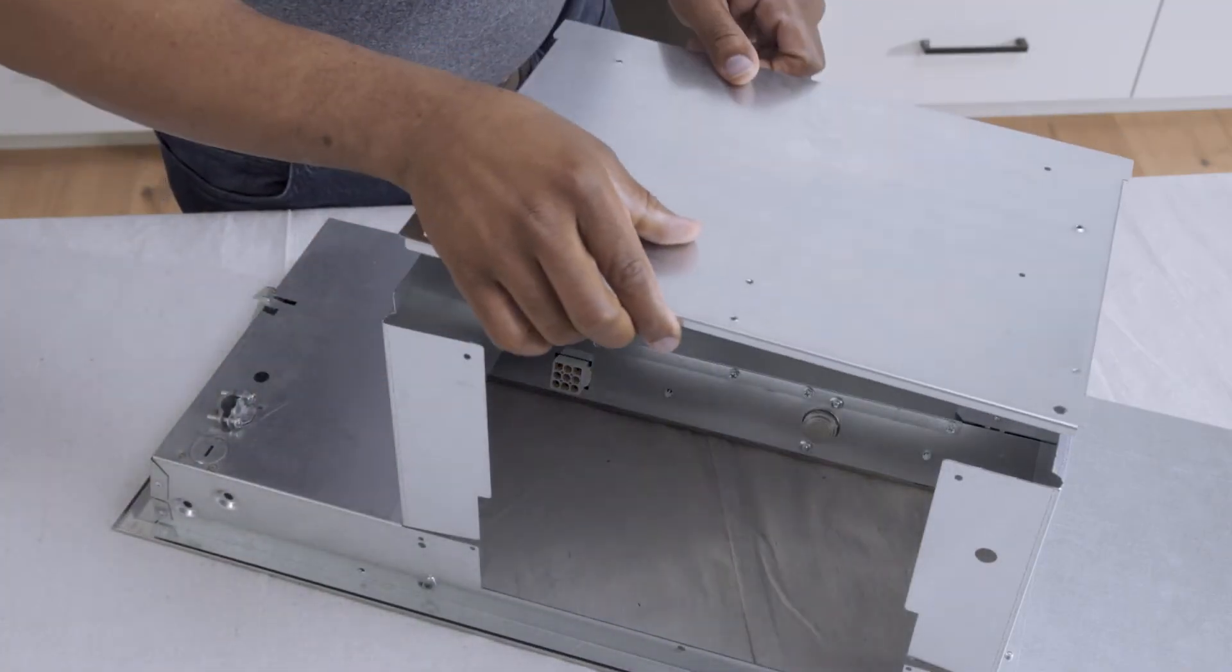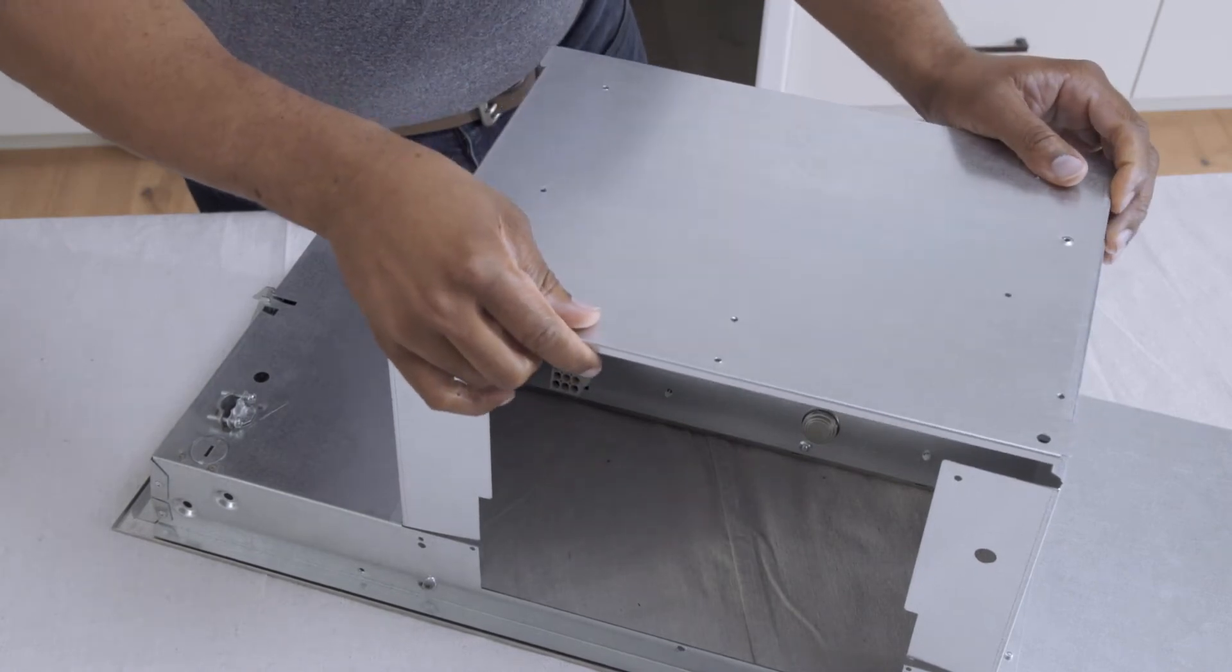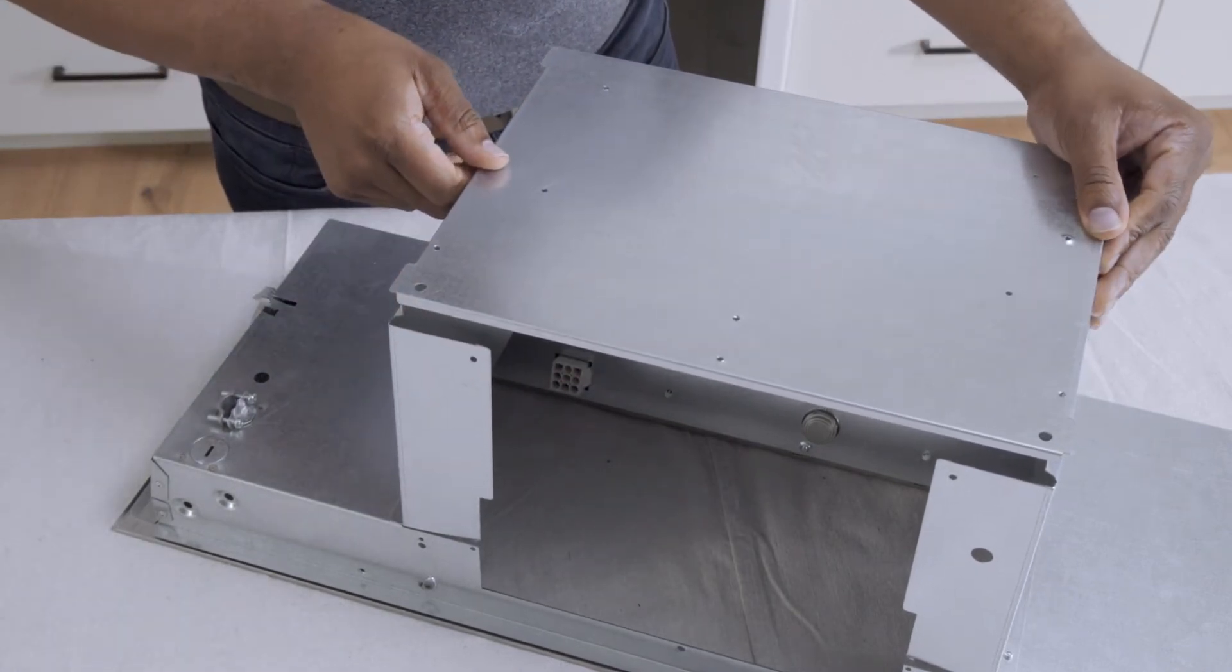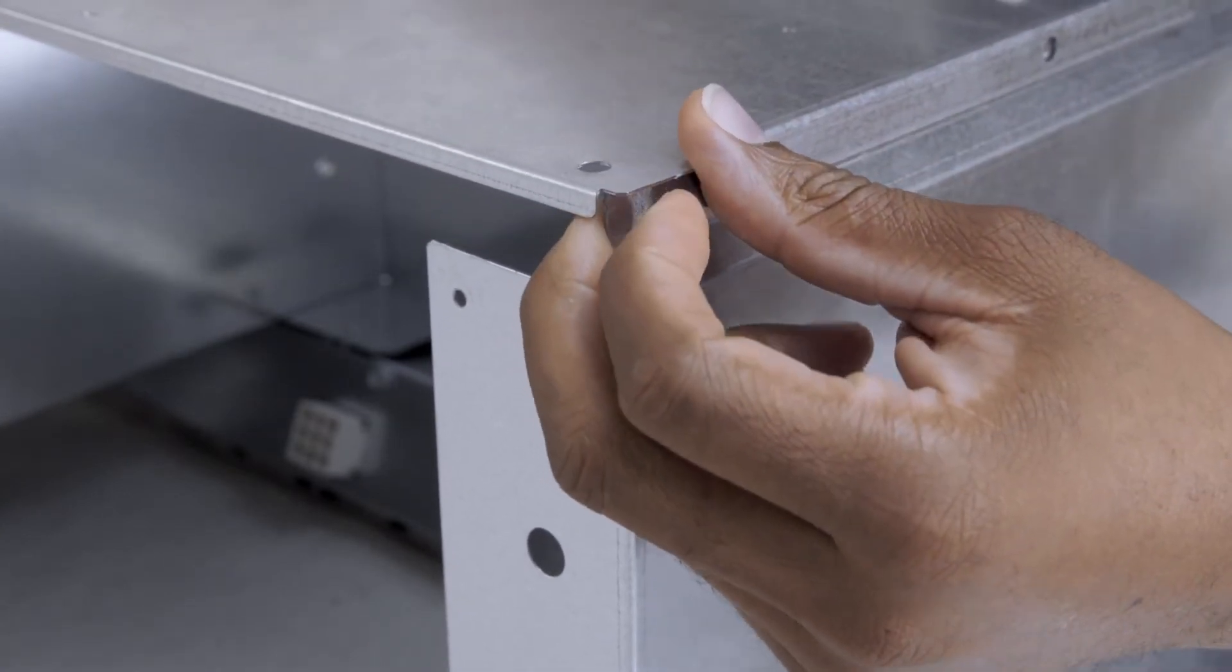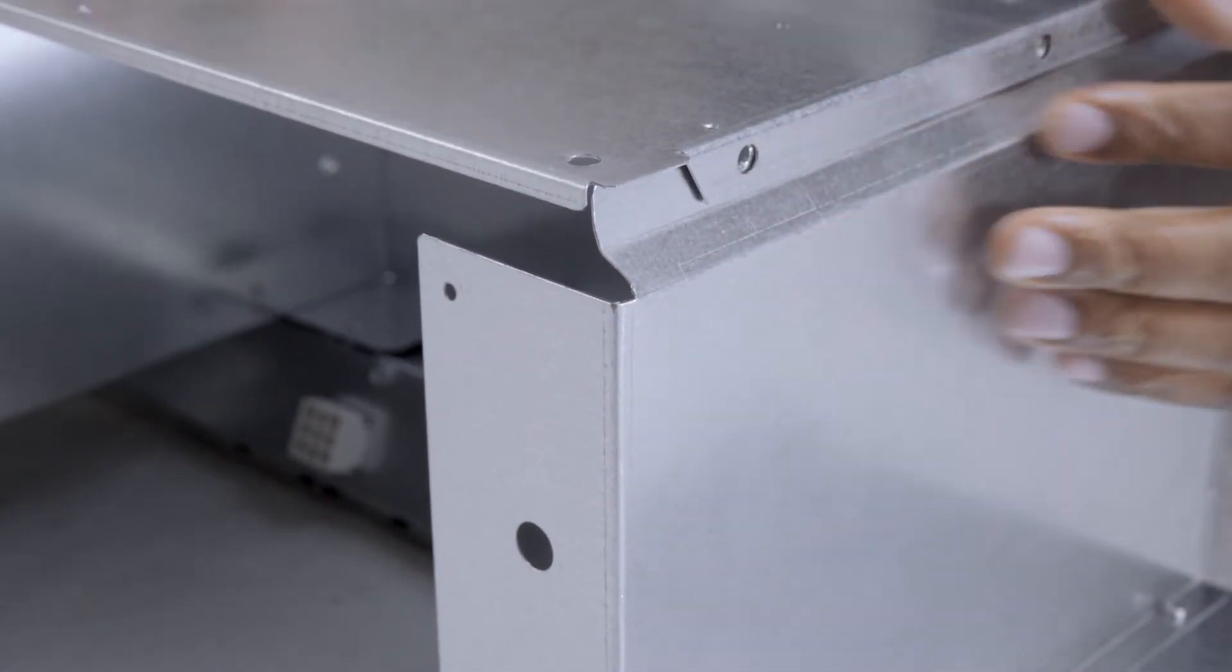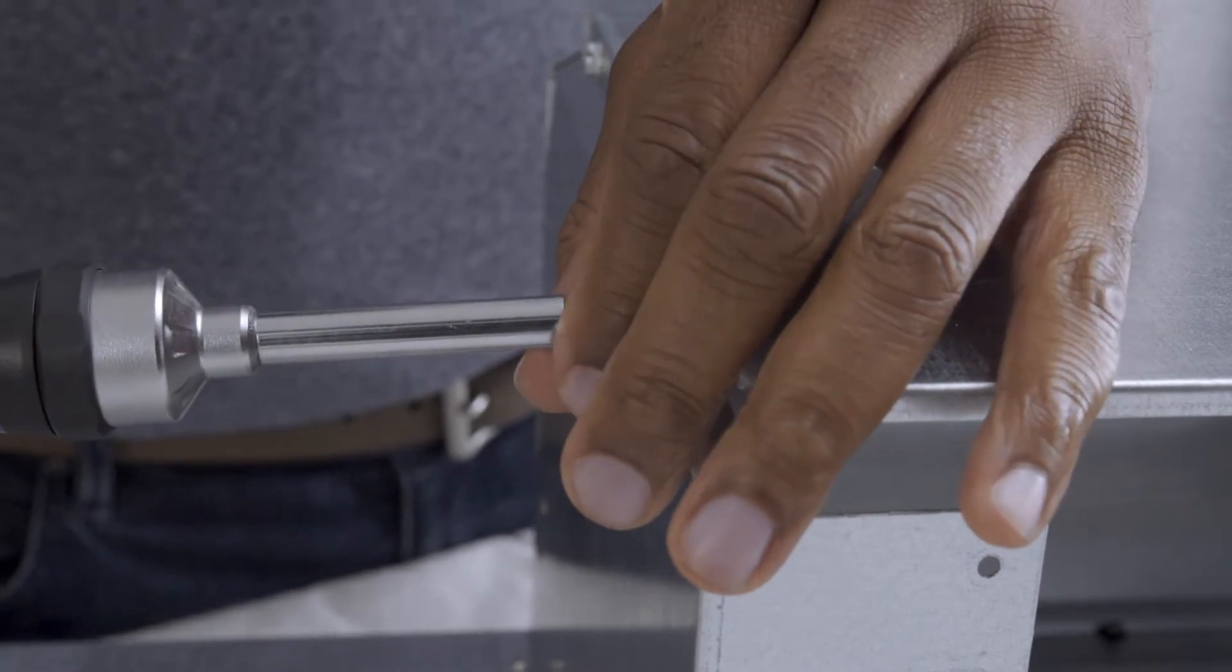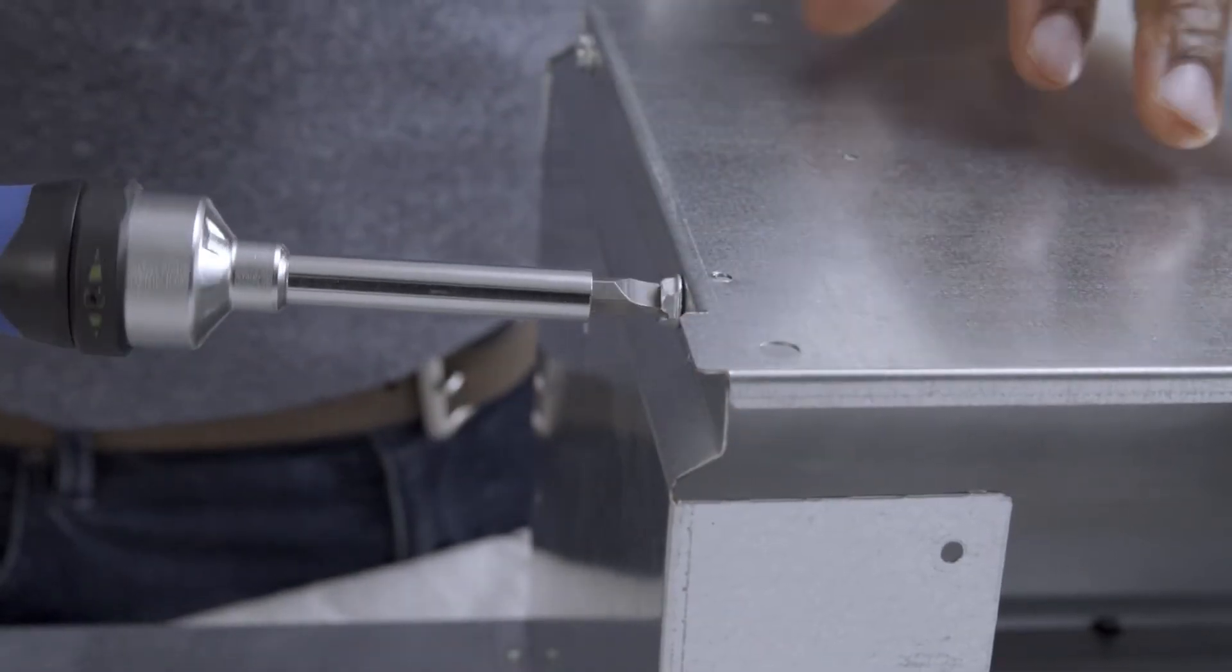Now, install the backplate on top of the unit where the blower support plate was. Align the corner holes to the back of the unit. Attach the plate to the top of the unit using the four previously removed screws.